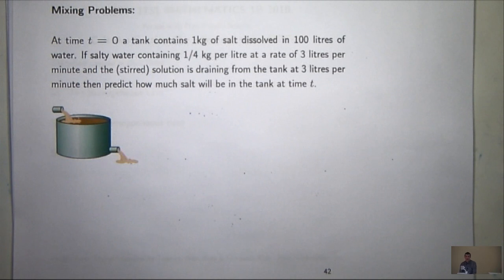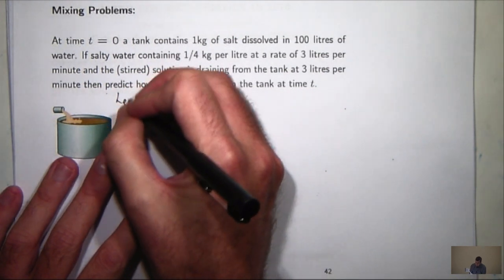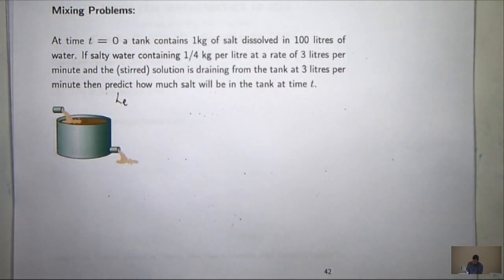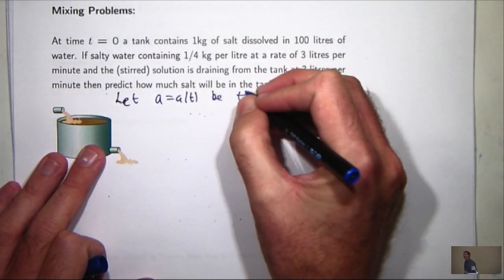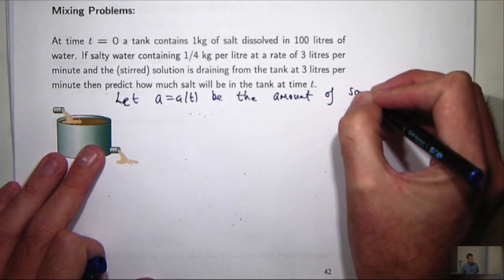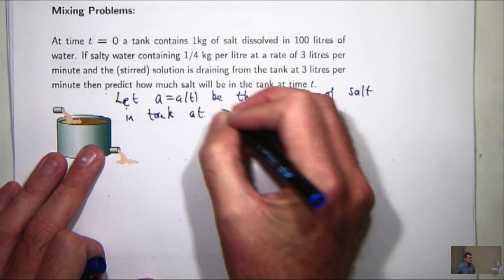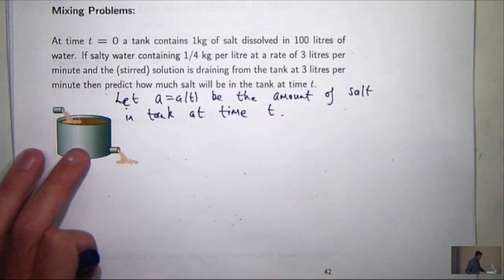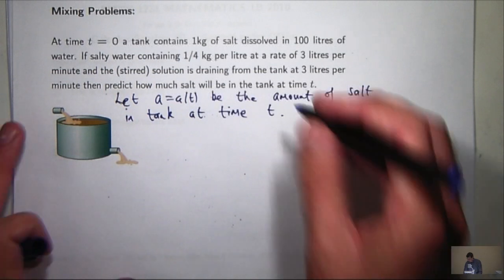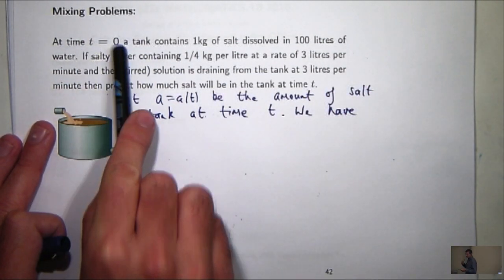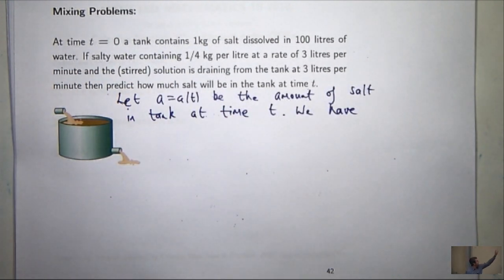So like any modelling problem, let's introduce some notation to mathematicise it. So I'm going to say let A(t) be the amount of salt in the tank at time t. So that'll be in kilograms. Now we have an initial condition there already. At time t equals zero, the tank contains one kilo of salt. So the initial condition A(0) is just one.